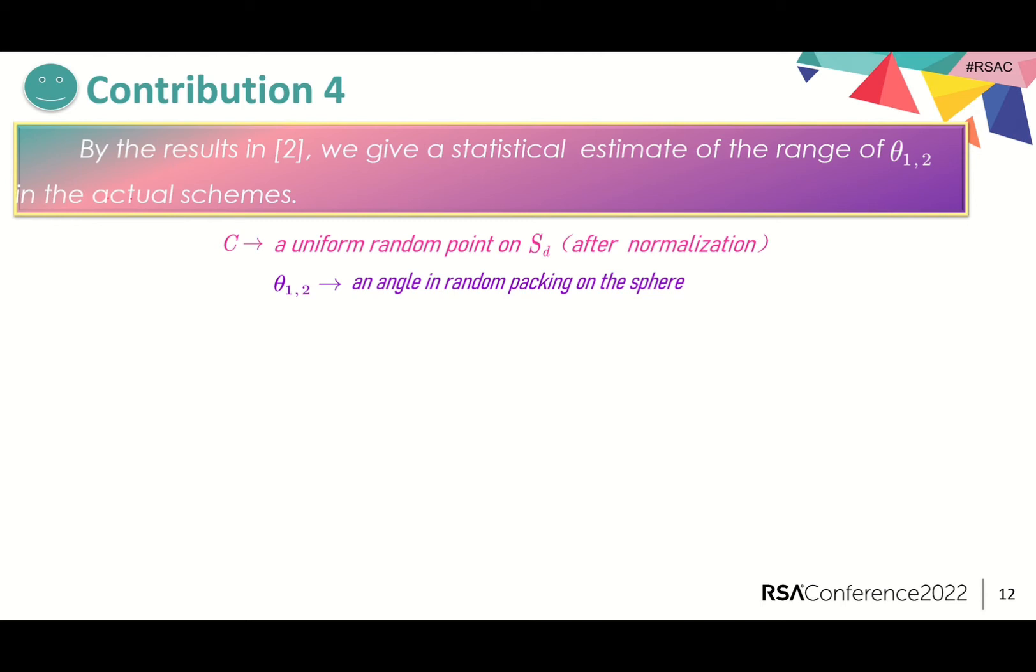The dimension of Ring/Module LWE/LWR-based public key encryption schemes is usually very high. There is a folklore conjecture that random vectors in high dimensional spaces are almost nearly orthogonal. This is often referred to as the orthogonality hypothesis.